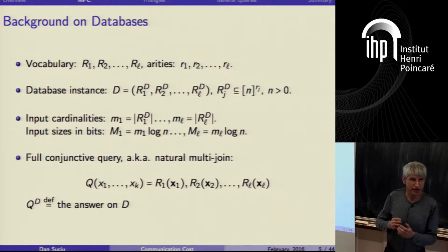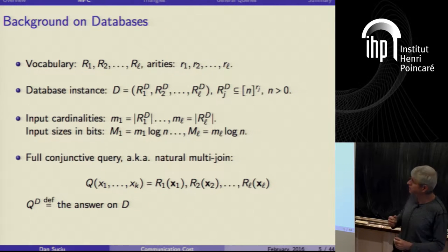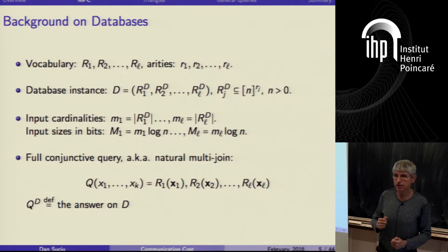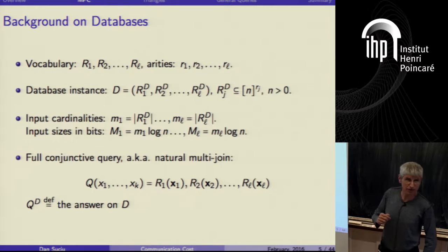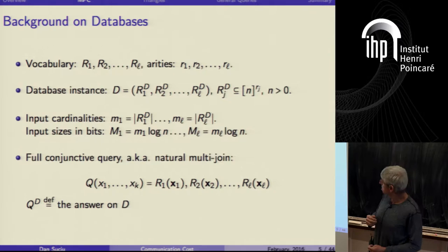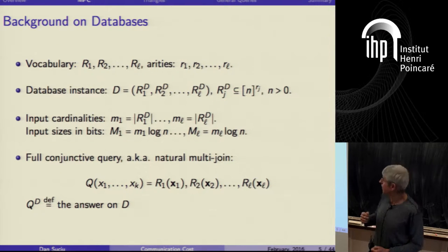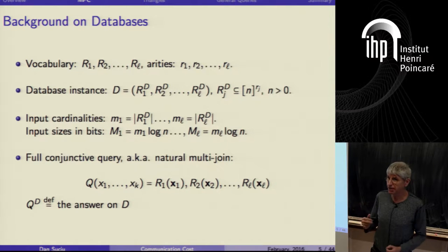A quick background in databases. The problems I'm interested in are queries over databases. We use a fixed relational vocabulary R1, R2, ..., RL with relational symbols of fixed arities. A database instance consists of a concrete relation for each relational symbol, and the relation is a subset of a domain of size n raised to the power of that relation's arity. I'll use lowercase m for the cardinalities — the number of tuples. For lower bounds it's more convenient to express relation sizes in bits, multiplying by log n.